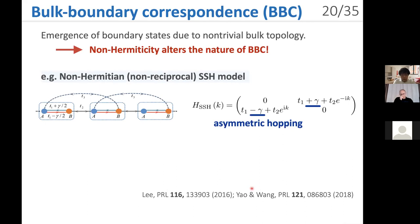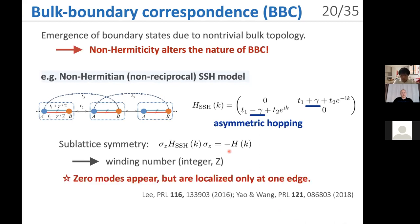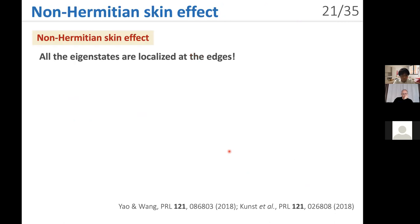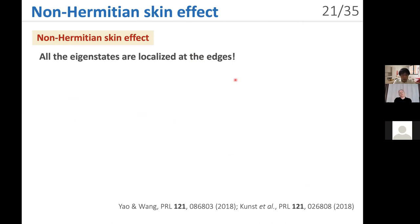Let's consider a non-Hermitian extension of the Su-Schrieffer-Heeger model, where non-Hermiticity is introduced by asymmetric hopping, similarly to the Hatano-Nelson model. Even in the presence of non-Hermiticity, the Hamiltonian respects sublattice symmetry, and we can define the winding number similarly to the Hermitian case. As a consequence of the winding number, zero modes appear under open boundary conditions. However, the zero modes can be localized only at one edge instead of both edges — this is impossible in Hermitian systems and is a unique property of non-Hermitian topological systems. To understand this phenomenon, the non-Hermitian skin effect is crucial: it states that all eigenstates can be localized at the edges in non-Hermitian systems.